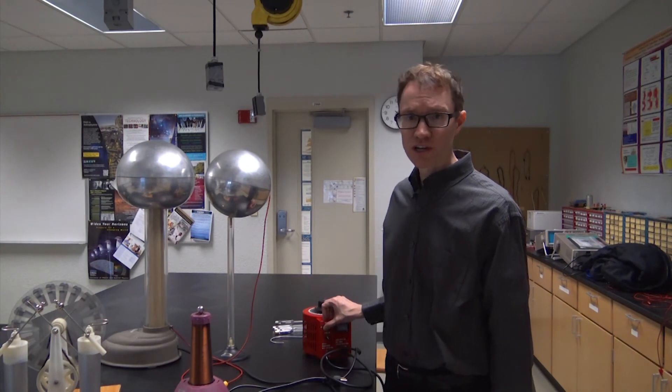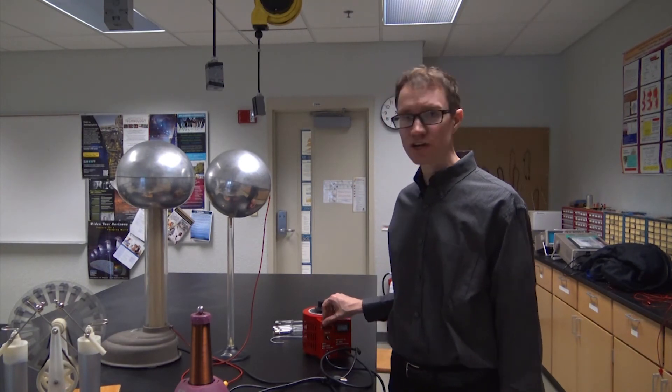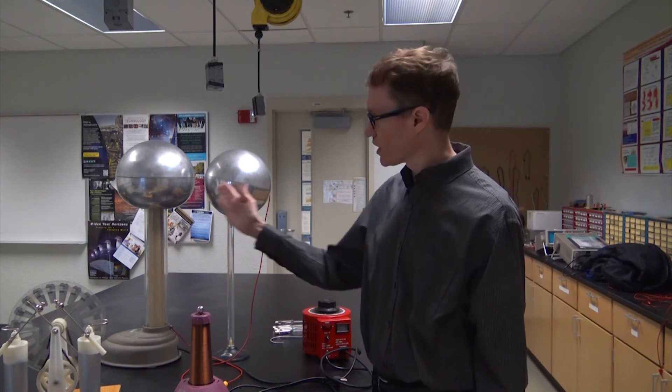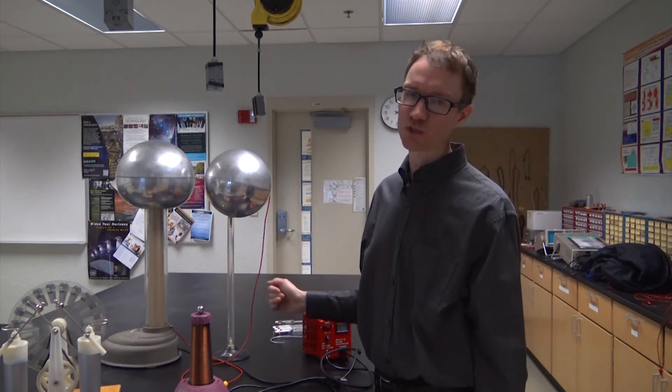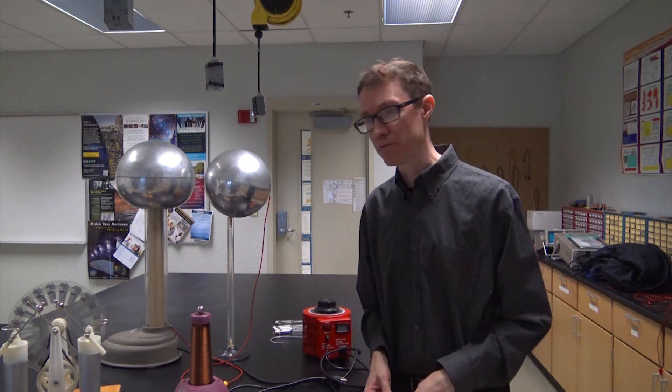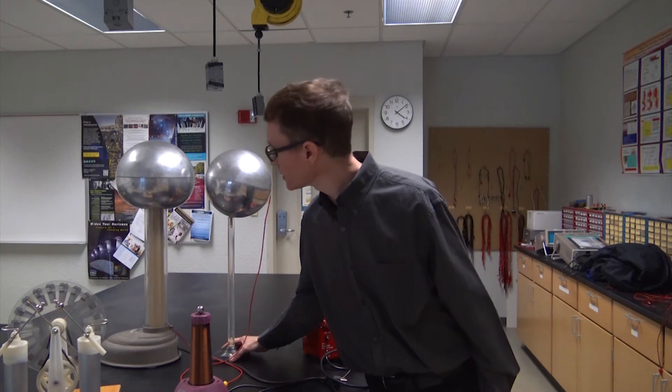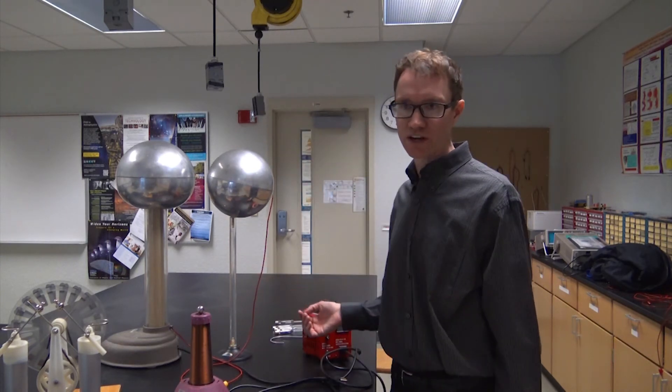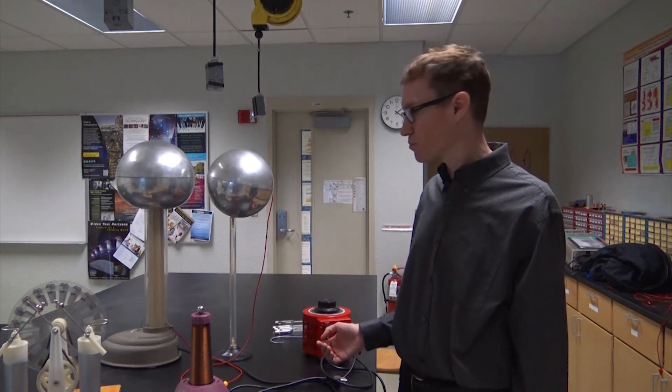I've got the Van de Graaff generator plugged in, and when I turn it on a motor is going to start running and we'll develop a potential difference between these two electrodes that grows with the amount of time that the motor has been turned on. Eventually that voltage will get high enough and we'll get a spark between the two electrodes as the air breaks down and then the process will repeat.